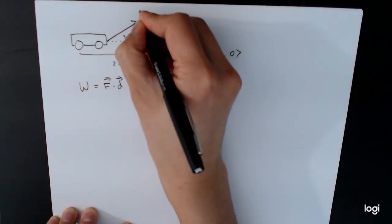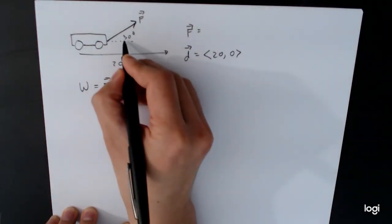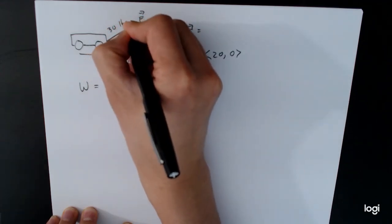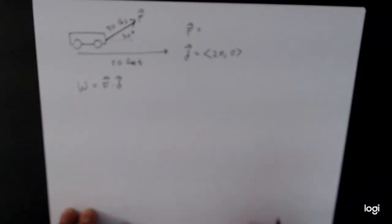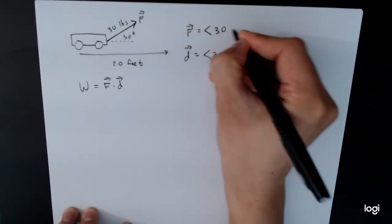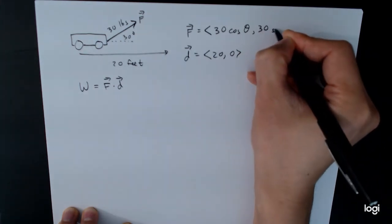And then for our force F, we have to figure out what it's going to be. Well we know the angle here, we know the total force is 30 pounds. And so we're going to use that. Remember that we can always have the length times cosine of the angle, comma, length times sine of the angle.